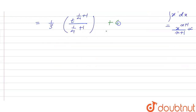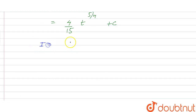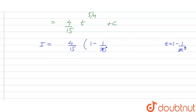So we have 1 by 3 and t raised to power 5 by 4 upon 5 by 4, which equals 4 by 5 when we take the reciprocal. This gives 4 by 15 into t raised to power 5 by 4 plus constant c. Replacing t with 1 minus 1 by x raised to power 3, the final answer is I equals 4 by 15 into 1 minus 1 by x raised to power 3, whole power 5 by 4, plus constant c.